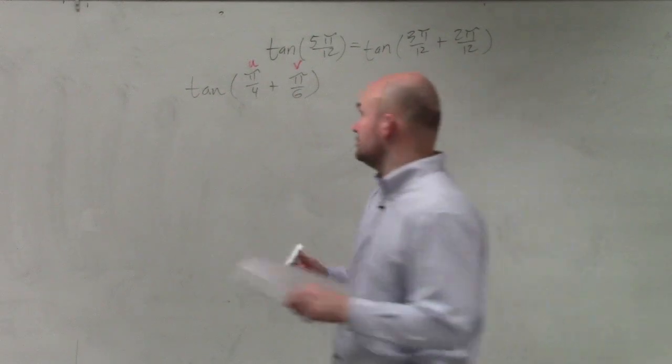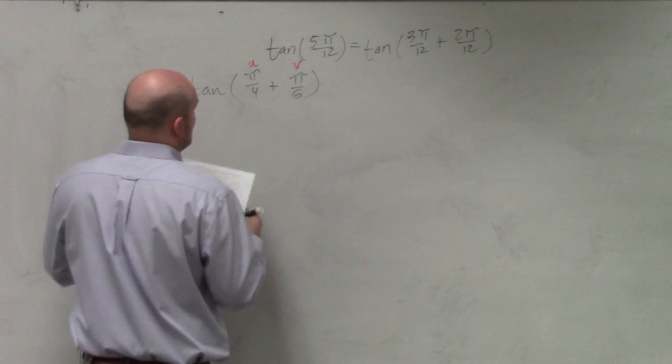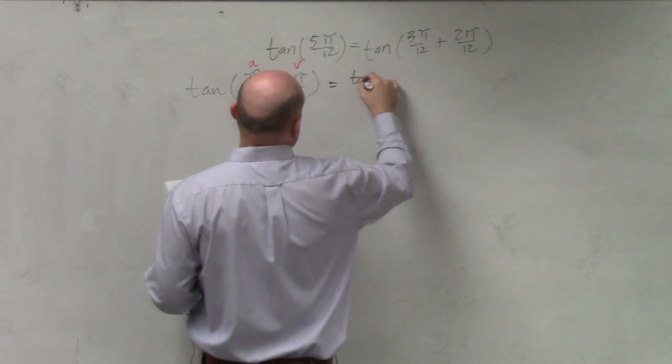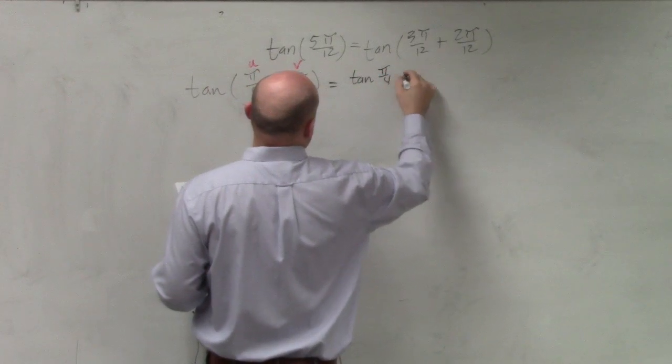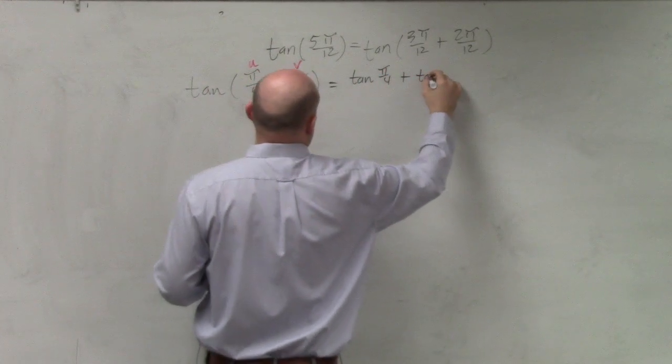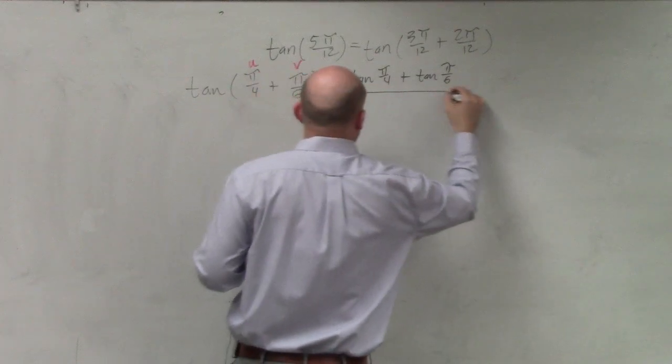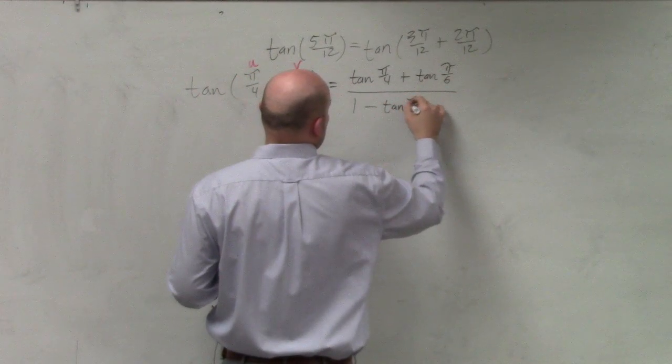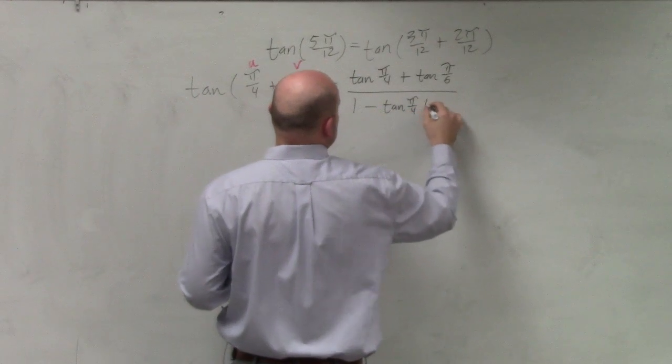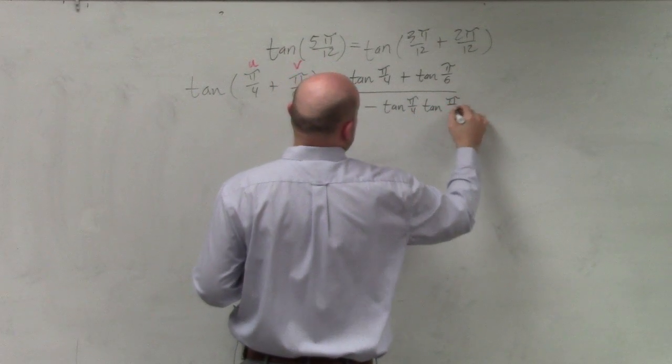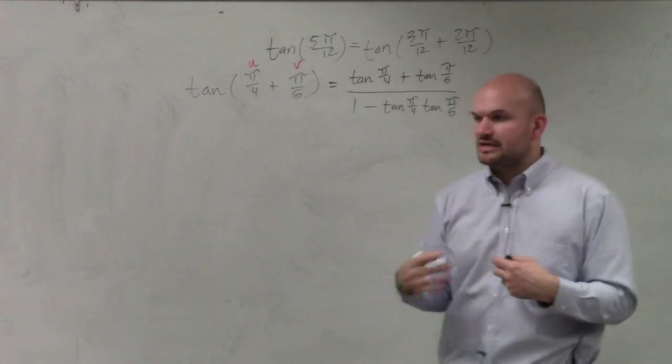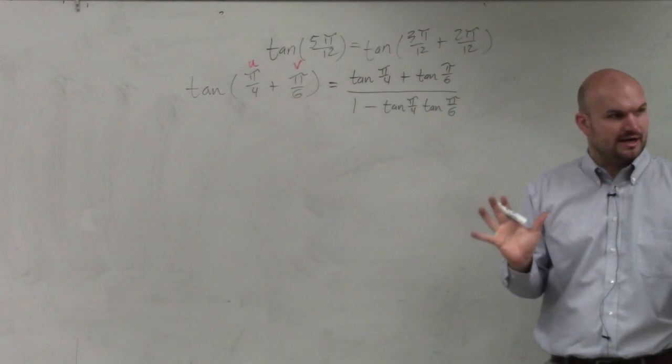So that's all we're simply going to do. So I'm going to have the tangent of π over 4 plus the tangent of π over 6 all over 1 minus tangent of π over 4 times the tangent of π over 6. So all I did was plug in those angles into the formula. Is everybody okay with that?